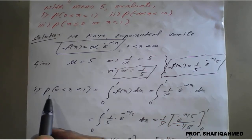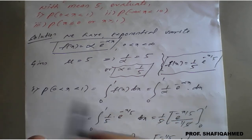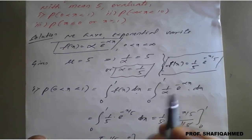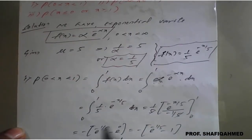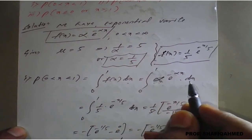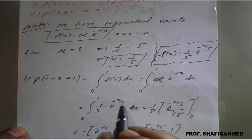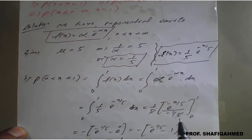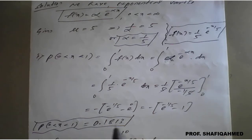For the first result, P(0 < X < 1), the range is 0 to 1. We integrate f(x) = α·e^(-αx) dx from 0 to 1. Replacing α with 1/φ, we get (1/φ)·∫e^(-x/φ) dx, which evaluates to e^(-x/φ) divided by (-1/φ). The φ terms cancel, leaving the minus sign. Applying the upper and lower limits gives the answer 0.1813.